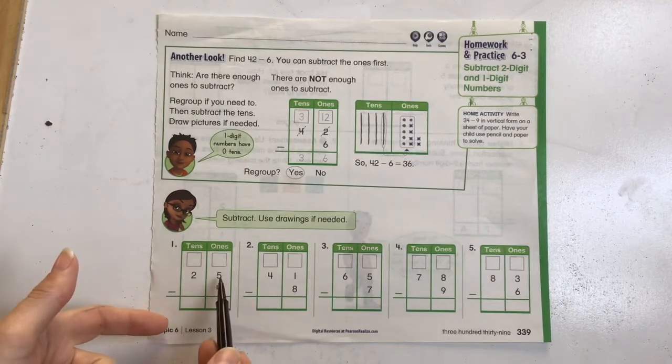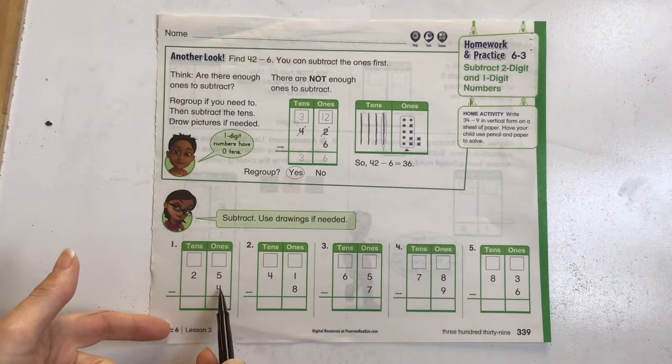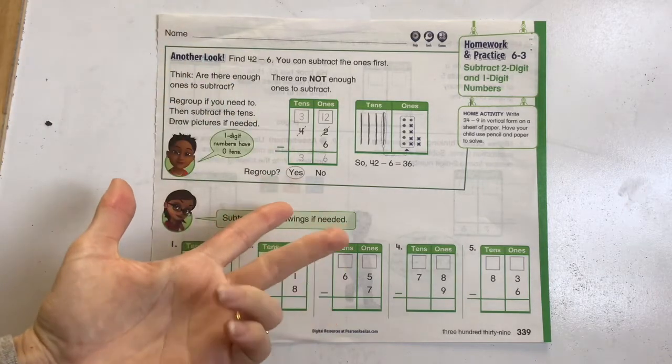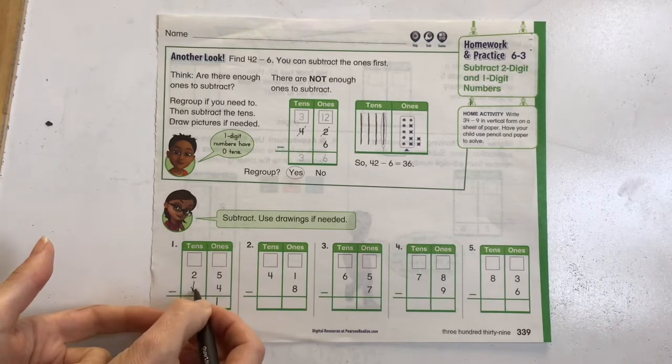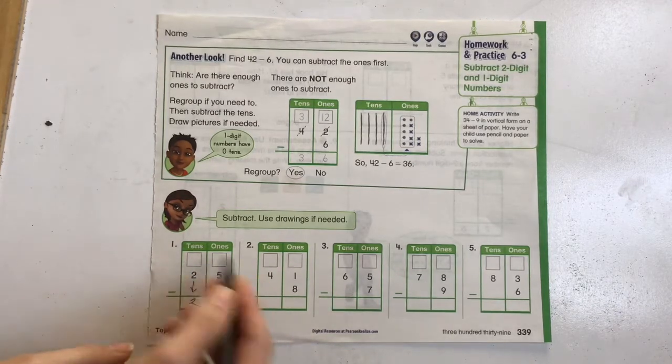So let's take a look here. 5 minus 4, we do not need to regroup. We can subtract that one straight down, and the 2 we just straight down. We do not need to regroup.